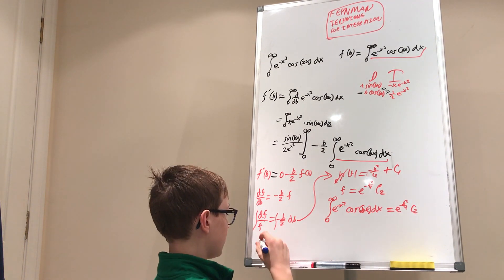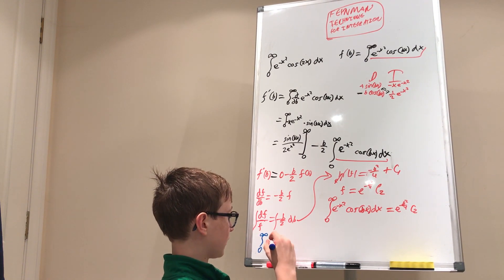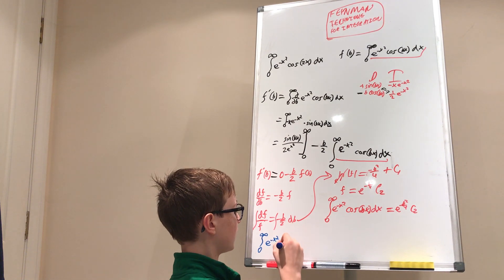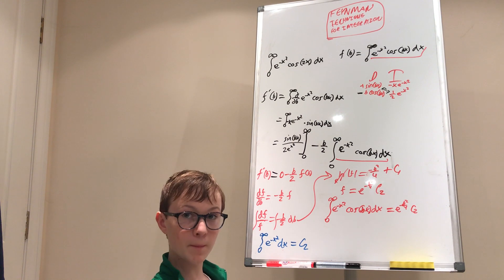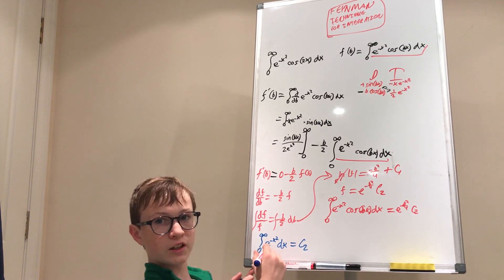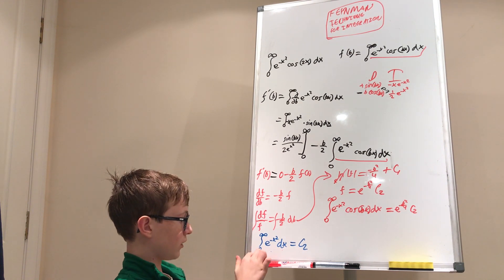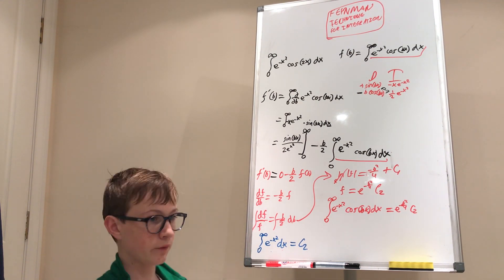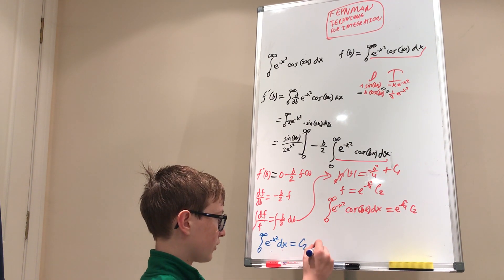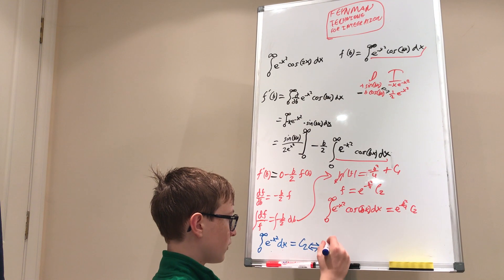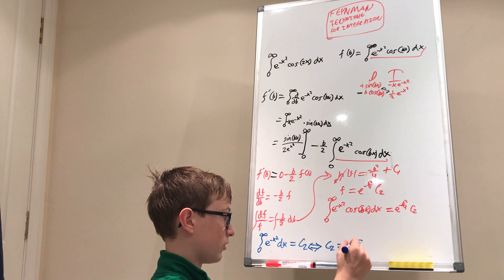For more loyal fans, you'll recognize this integral — the Gaussian integral evaluated from 0 to infinity. I did this a few days ago, but with bounds from negative infinity to infinity. This is just half of that integral, so C₂ equals the square root of pi divided by two.